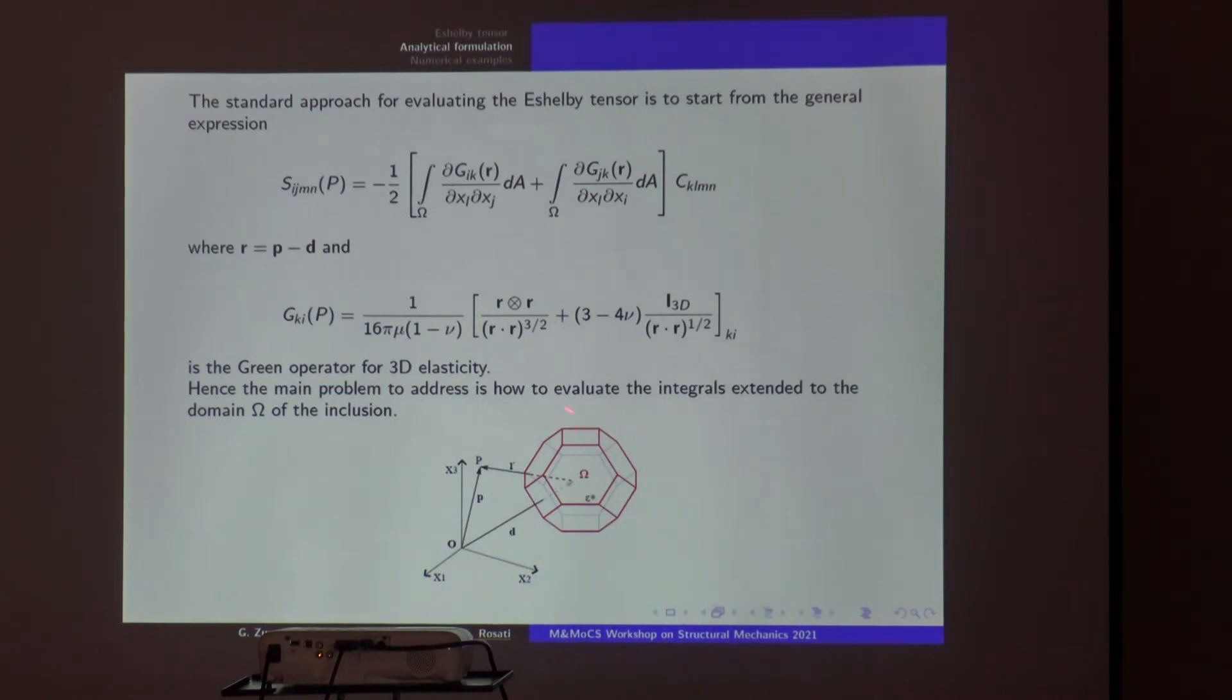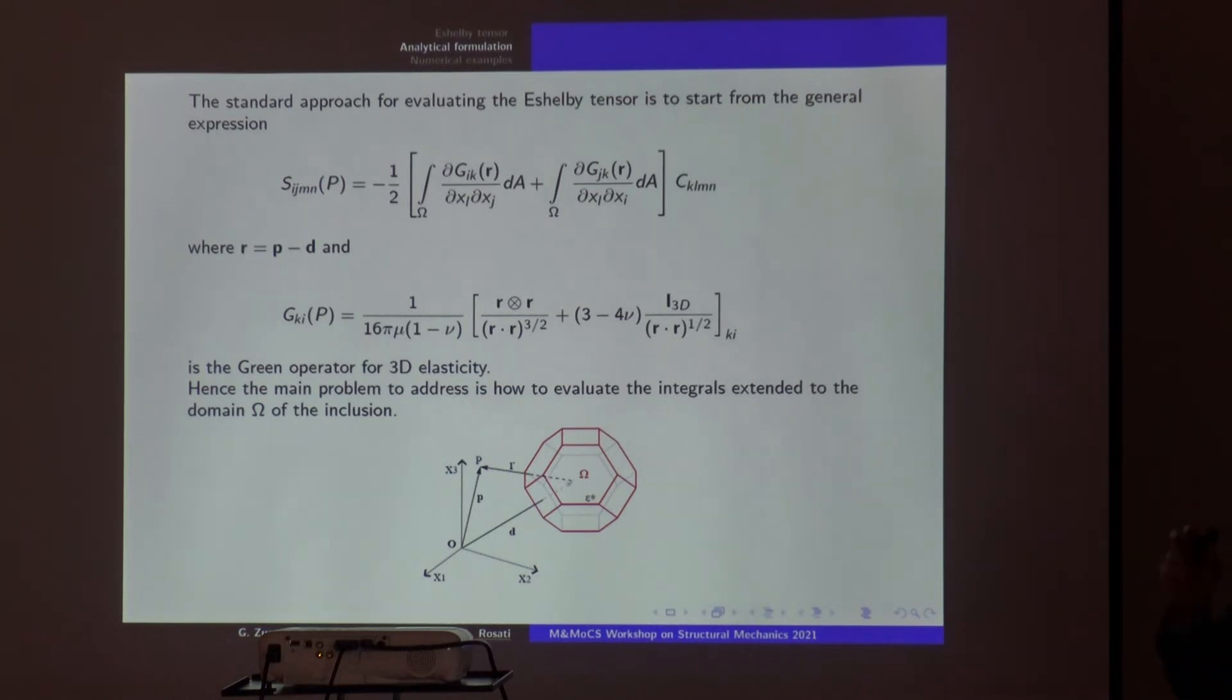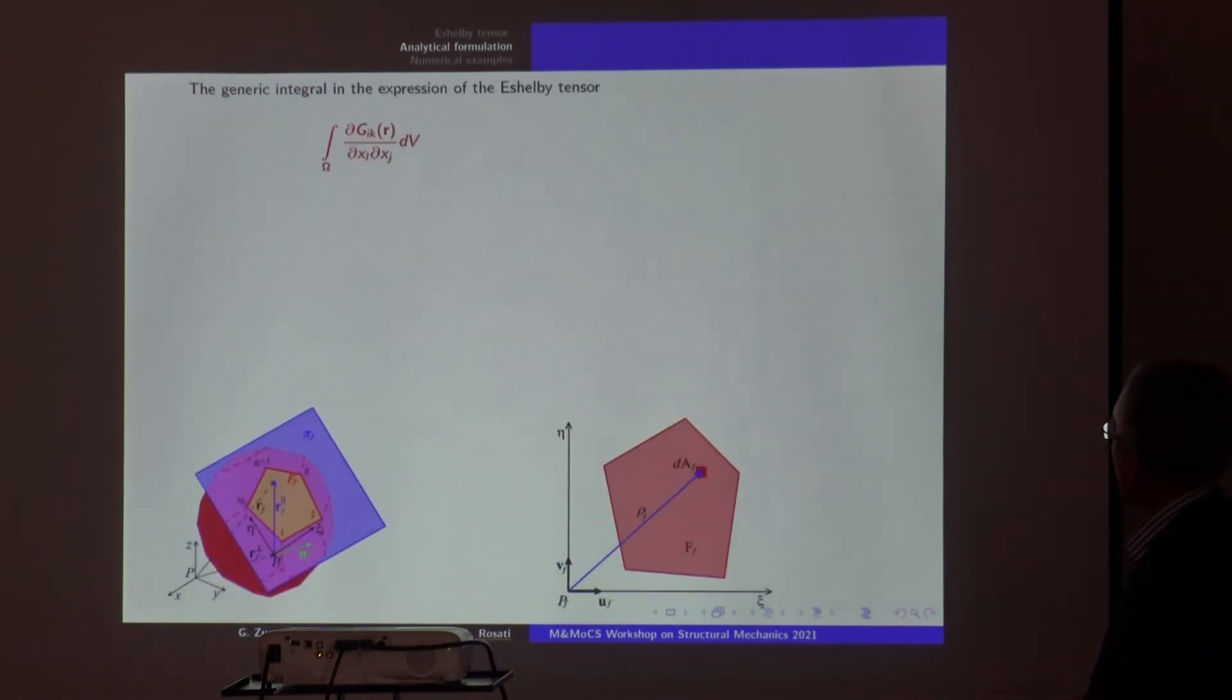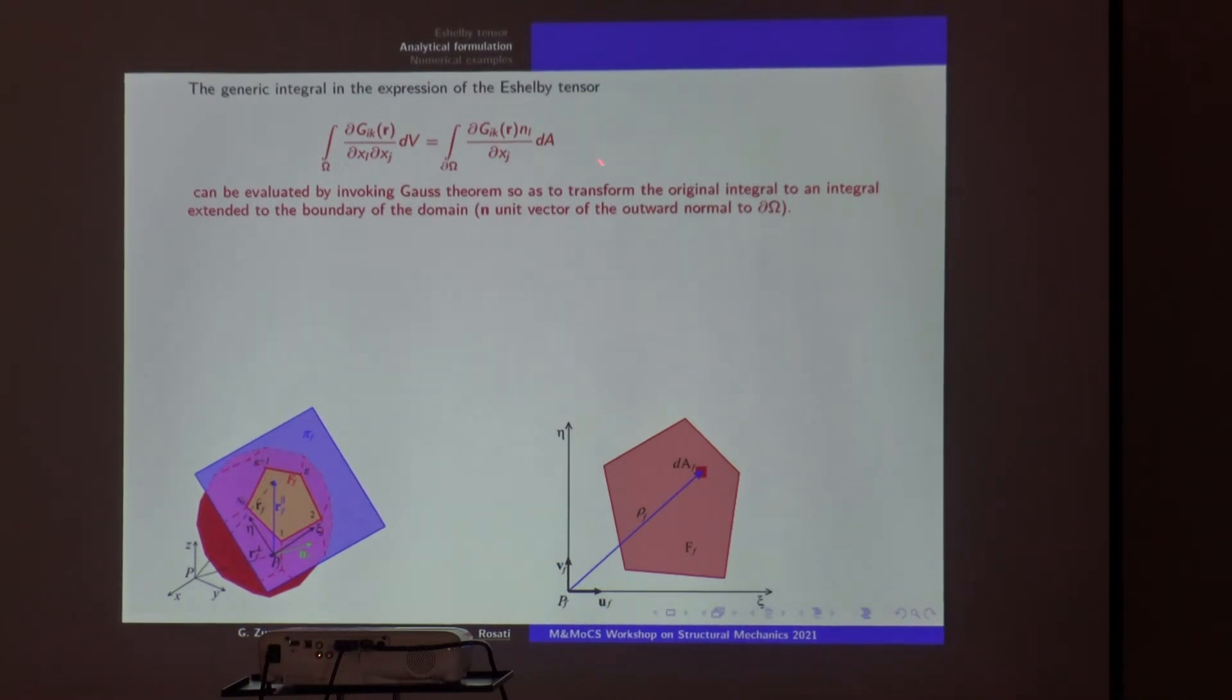How? I have to integrate over the domain of the inclusion. I transform this integral by applying twice the Gauss theorem. First I integrate over the facets, the boundary of the inclusion, and then I integrate over each edge of each facet that represents your inclusion. So the main concern of the paper is how to make this. The first application is simple because you have just a gradient here, so you take one, you discard one derivative, and you include the unit normal to the boundary. Now you are making an integration over the generic face of your boundary.